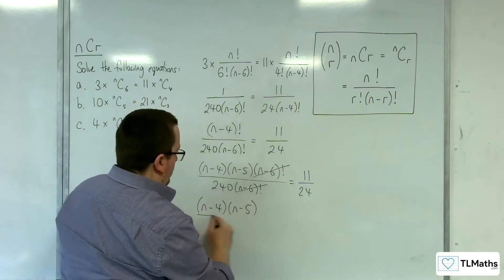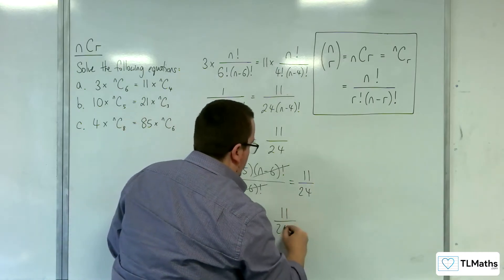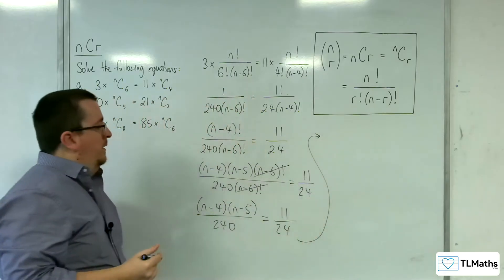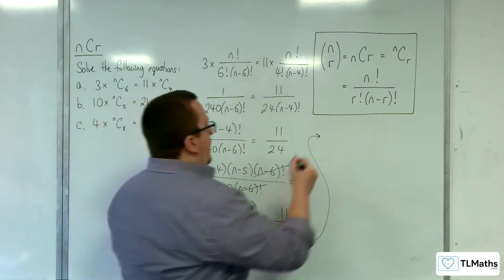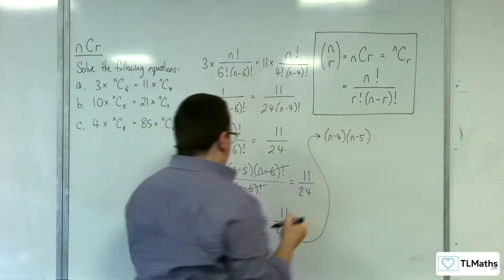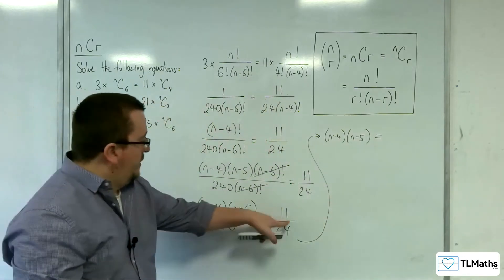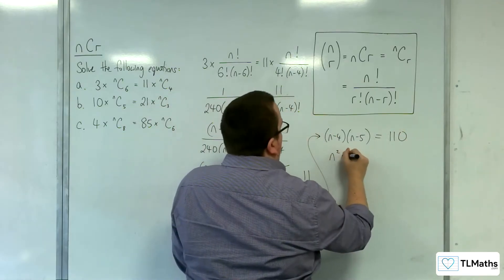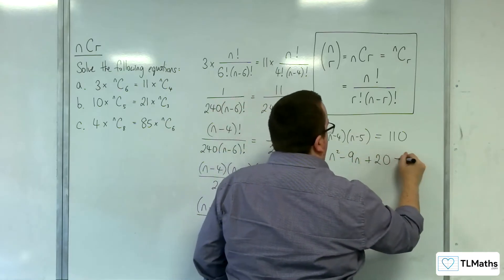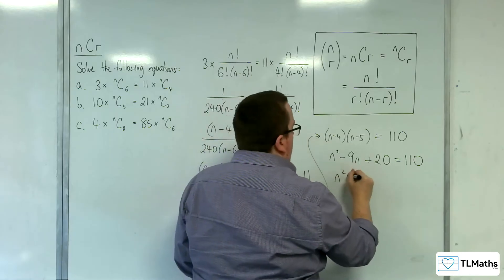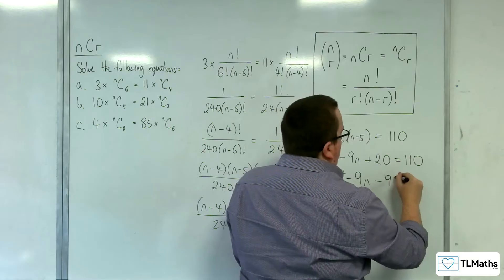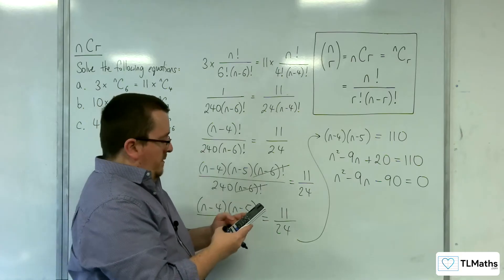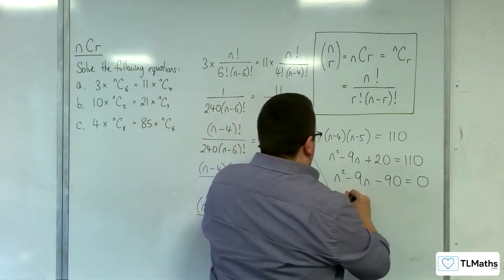We're left with (n minus 4)(n minus 5) over 240 equals 11 over 24. Multiplying both sides by 240 gives (n minus 4)(n minus 5) equals 110. Expanding the brackets: n² minus 9n plus 20 equals 110. Subtracting 110 from both sides: n² minus 9n minus 90 equals 0. Solving that quadratic gives n equals 15 or n equals minus 6.